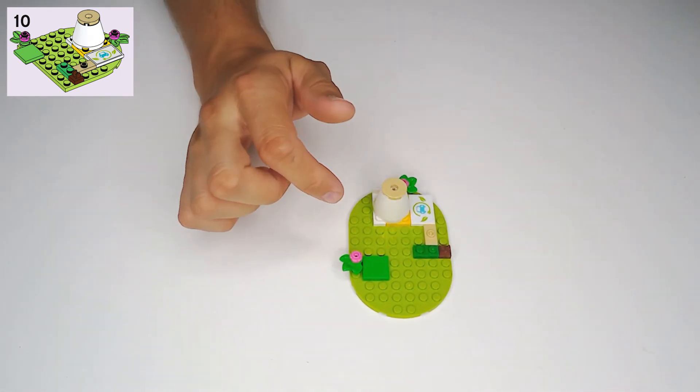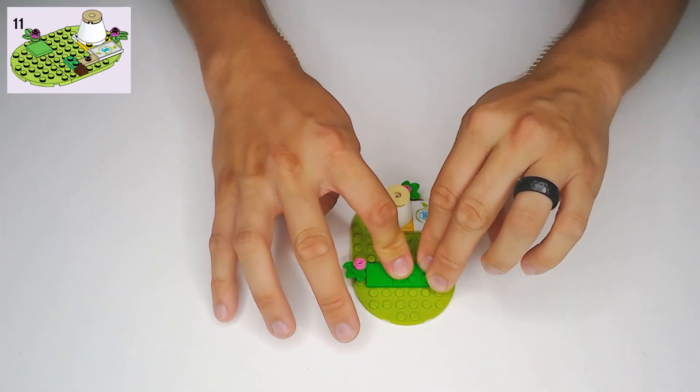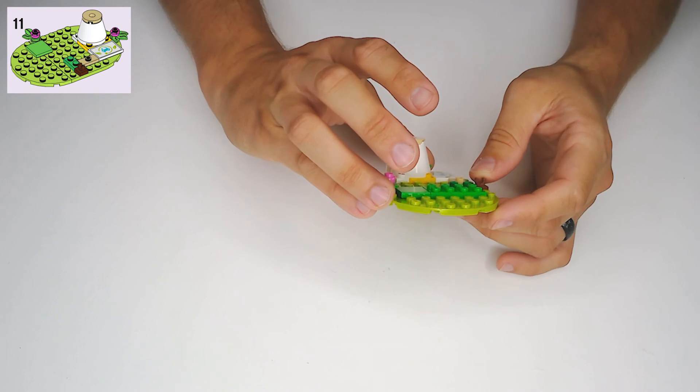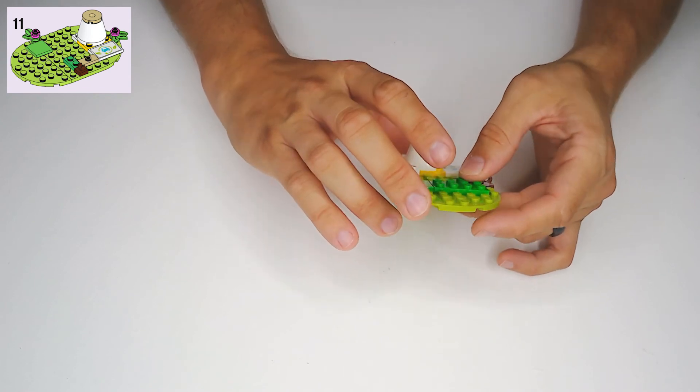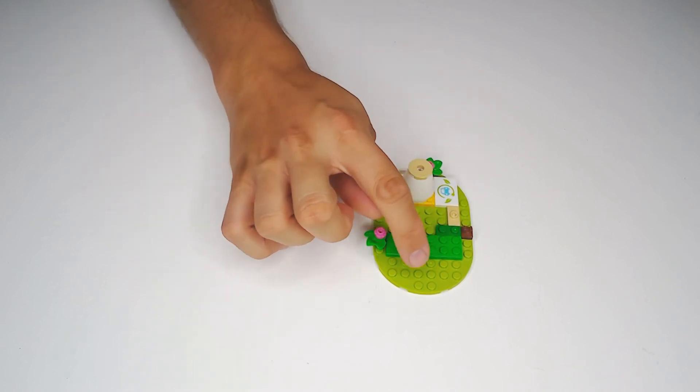And then in step twelve, right alongside that, we're going to put this dark green two by four plate, like that. I guess it's a middle gray, I mean a middle green. Middle green, is that a dark green? Oh, this piece is dark, this is middle, this is light, okay.